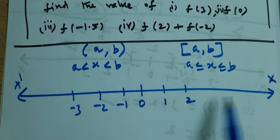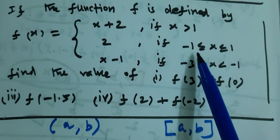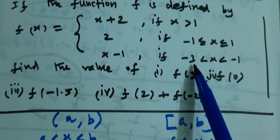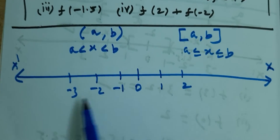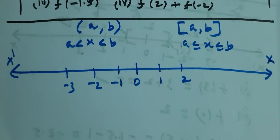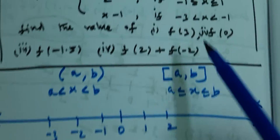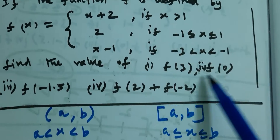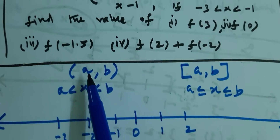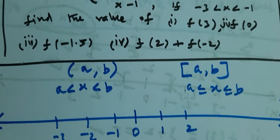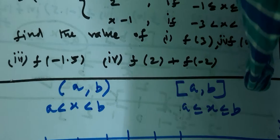On the number line, we used the values 1, minus 1, and minus 3. Now we mark each condition on the number line.